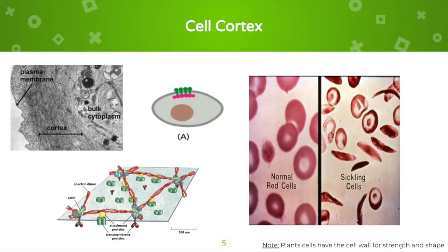In the drawing on the bottom, the spectrin dimer is shown in red, creating a meshwork to hold a specific shape. Without the restricted proteins holding this shape, disorder can occur in the organism. For example, sickle cell anemia is a result of misshapen red blood cells.